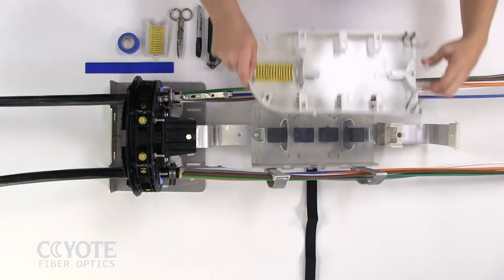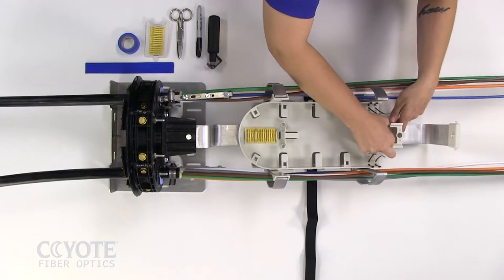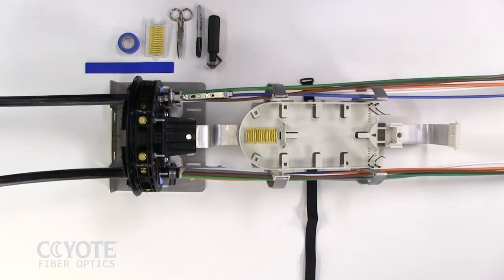Install a prepared splice tray into the hinge bracket by squeezing the legs on the splice tray together and inserting the legs into the hinge bracket.